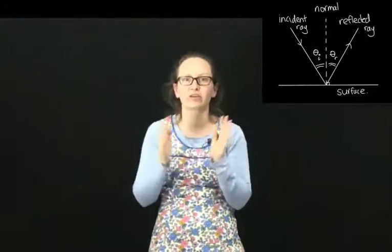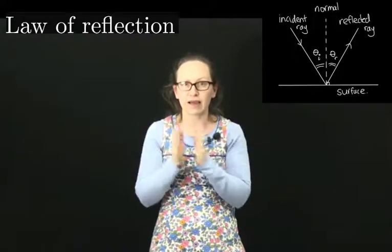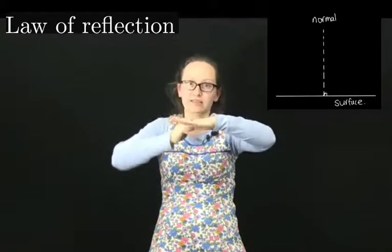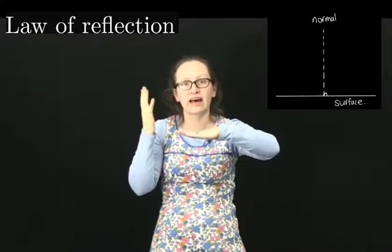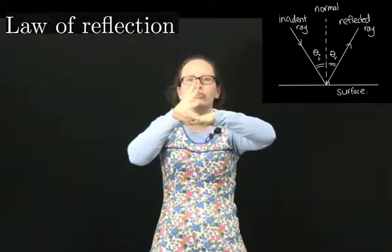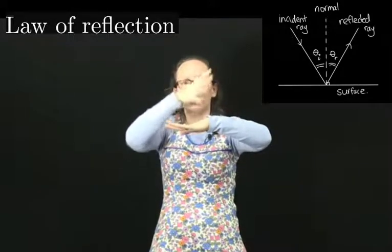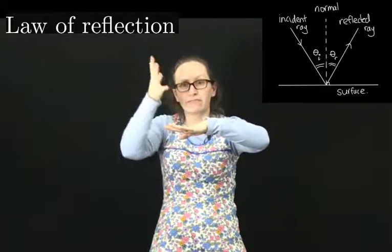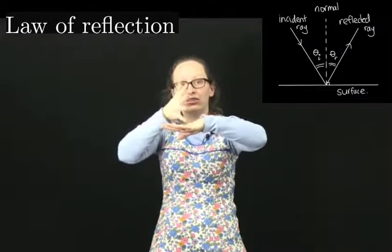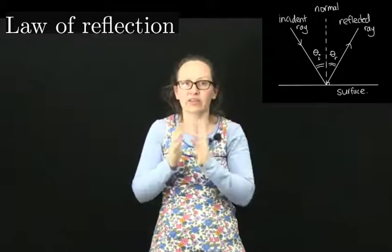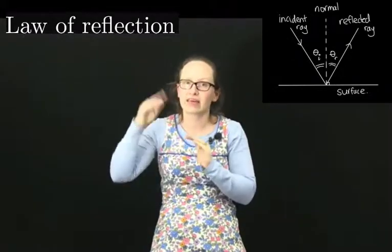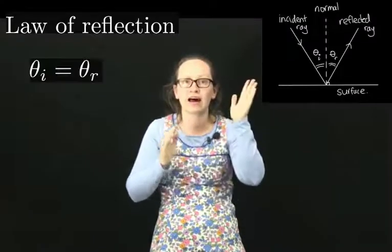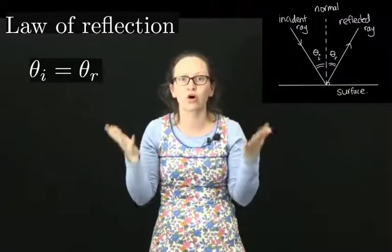Let's start by considering the law of reflection, which describes what happens when light hits a surface. We start by drawing a normal to the surface — a perpendicular line to the surface. The angle of incidence, which is the angle between the incoming ray and the normal, is equal to the angle of reflection, which is the angle between the reflected ray and the normal. If we represent θᵢ as the angle the incoming ray makes with the normal, and θᵣ as the angle the reflected ray makes with the normal, then θᵢ = θᵣ. This is known as the law of reflection.